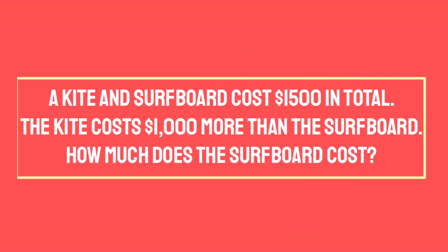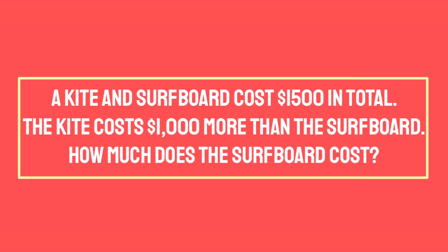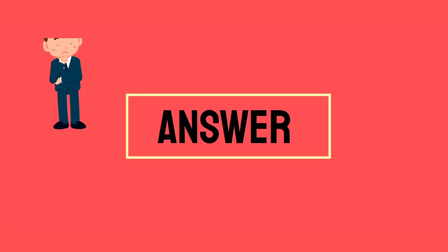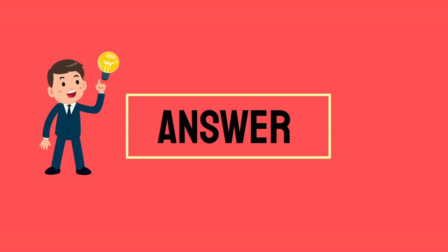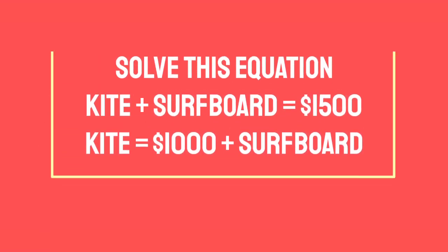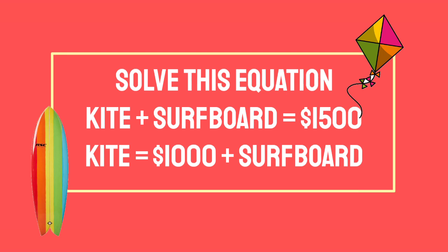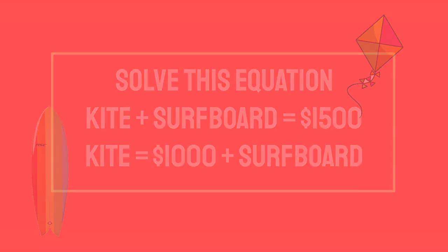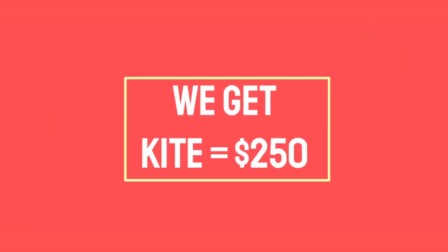A kite and surfboard cost $1,500 in total. The kite costs $1,000 more than the surfboard. How much does the surfboard cost? Solving: kite plus surfboard equals $1,500, and kite equals $1,000 plus surfboard. We get the surfboard costs $250.